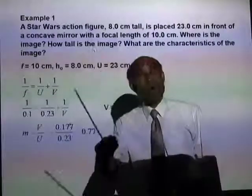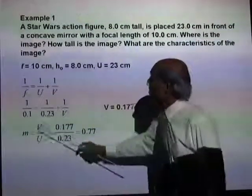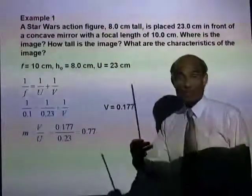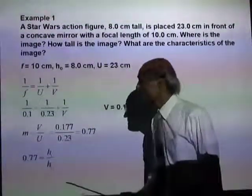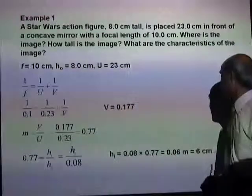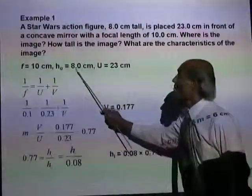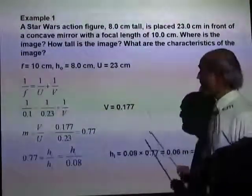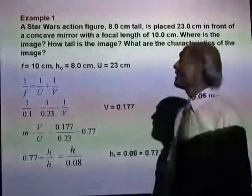The size of the image is smaller than the object. Magnification is also equal to H_I divided by H_O — the height of the image divided by the height of the object. So 0.77 equals H_I divided by H_O, and therefore H_I equals 0.06 meter or 6 cm. The height of the object is 8 cm and the height of the image is 6 cm, so the image is diminished. The image is a real image formed by the actual intersection of the light rays.